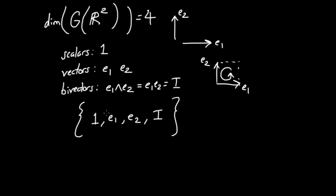Any object in this four-dimensional vector space can be written as a linear combination of these basis elements — the scalar 1, the vectors E1 and E2, and the bivector I. These general combinations are called multivectors, and maybe I'll get to those in a future video.